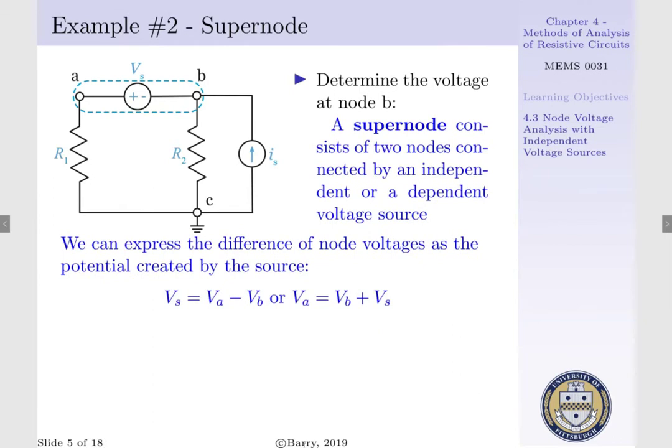We can say Vs is equal to the potential at Va less Vb. Or conversely, we can say the potential at A is equal to the potential at B plus that generated by our source, Vs.